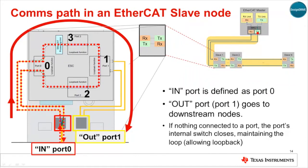Two ports are needed only if redundant cabling is required. Inside an EtherCAT slave node there are four ports, with the input port being designated as port 0. Incoming data flows to each port in turn in the sequence 0, 3, 1, 2. If a given port is not connected externally — for example, ports 1 to 3 in this diagram — an internal switch is closed, allowing the data to continue flowing to the next port and ultimately back to port 0 to begin its return trip to the EtherCAT master.